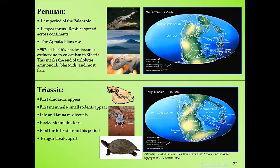During the Triassic, new organisms formed, the Rocky Mountains began to form, and the first turtle fossil dates from this period. A key highlight of the Triassic is also the beginning of the breaking apart of Pangaea.